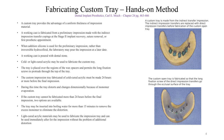Always keep this in mind: if the patient is trying to close their mouth with the impression tray inside and the handle hits the lip, the patient will not be able to close their mouth. A custom tray provides the advantage of uniform thickness of impression material. A working cast is fabricated from a preliminary impression made with the indirect impression transfer coping after the stage two implant recovery, when sutures are removed or at the first appointment for starting the restoration.